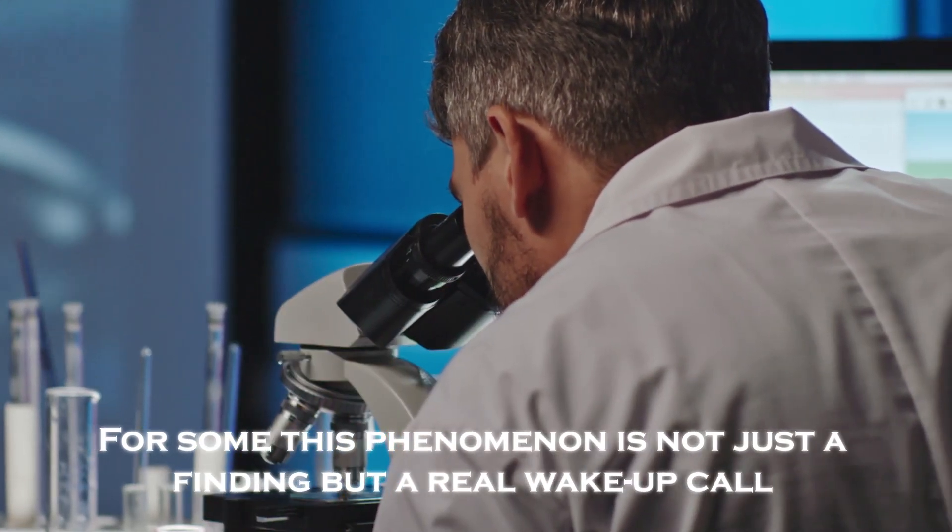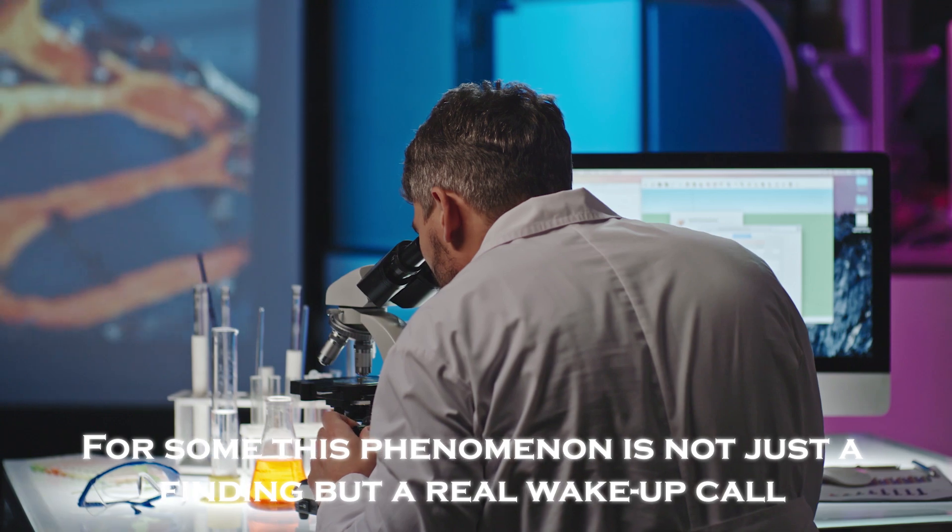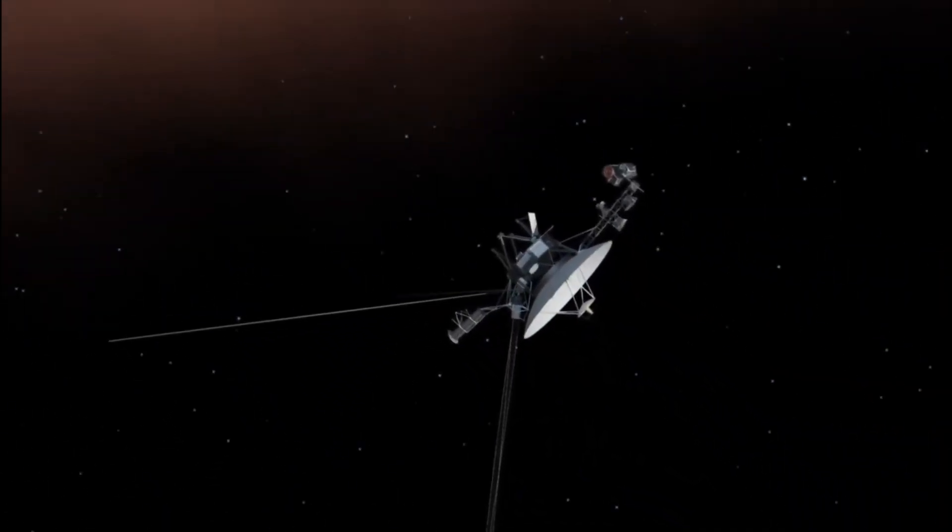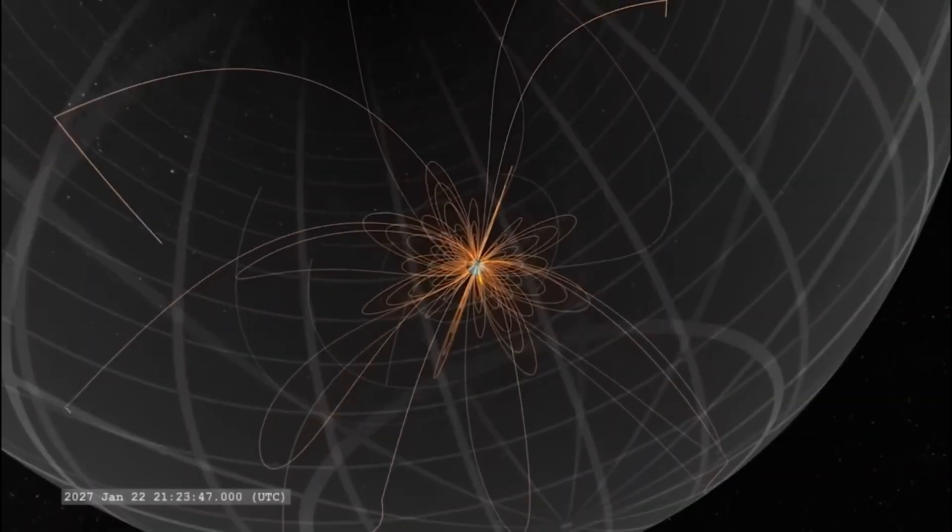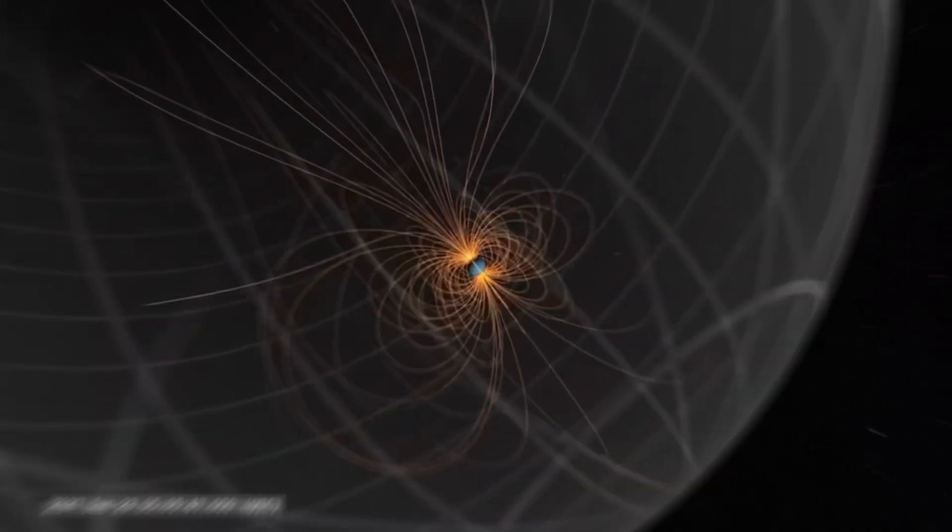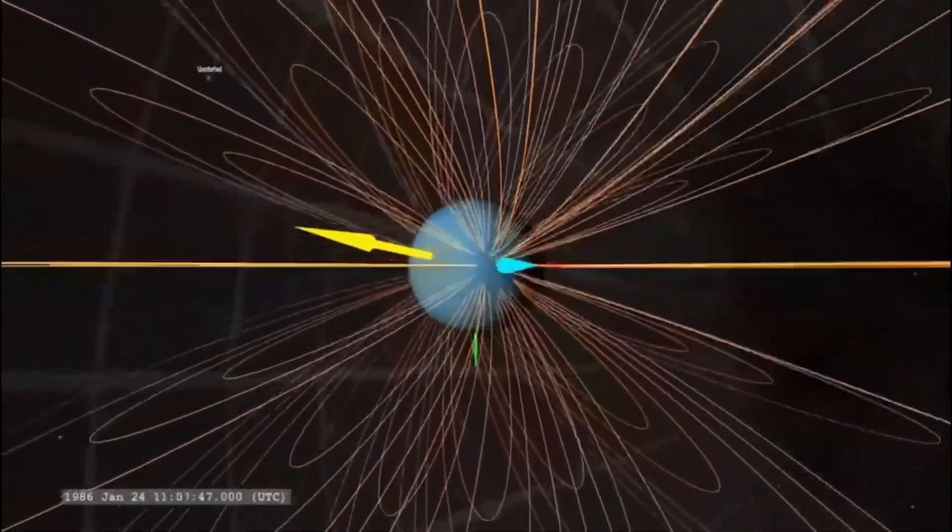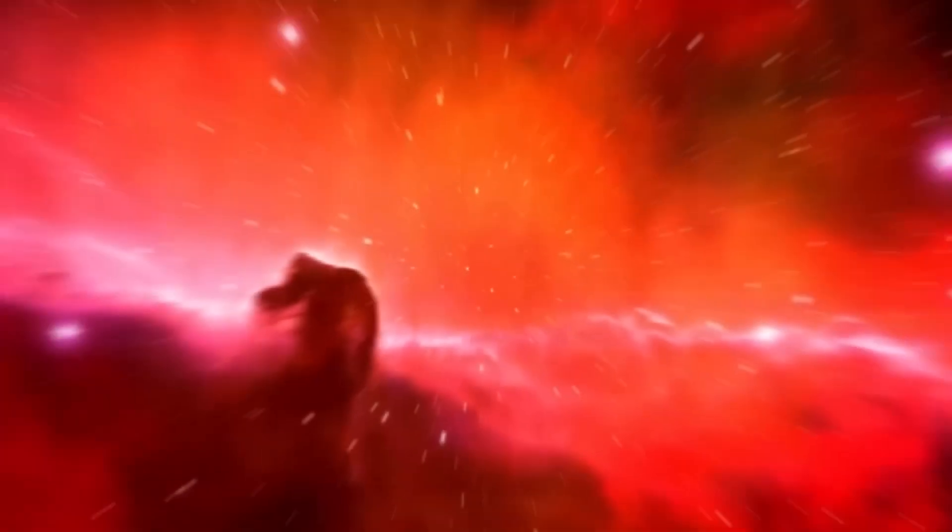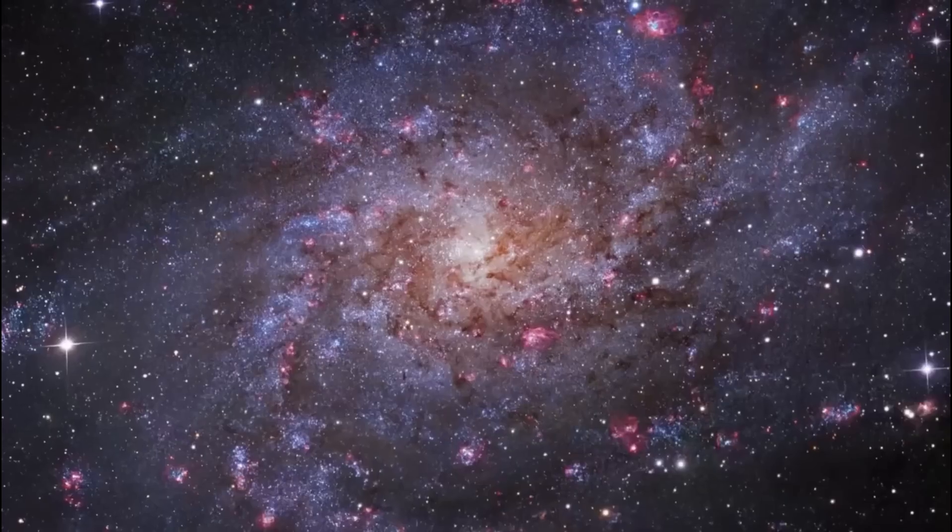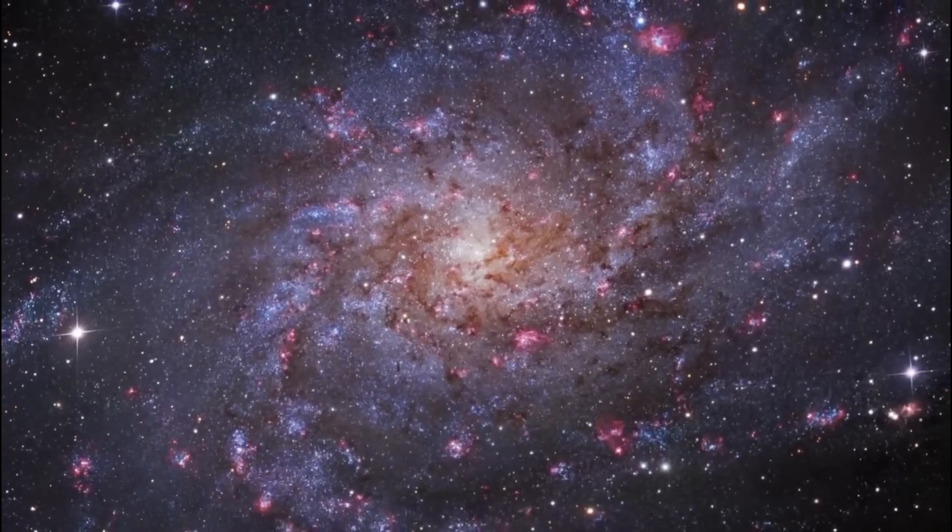For some scientists, this phenomenon is not just a finding, but a real wake-up call. Voyager 1 may be discovering an energy grid or something similar at the edge of our solar system. If these energy streams exist, we are seeing for the first time how the solar system connects to the galaxy on a scale we had not anticipated. This could radically change our understanding of energy in the universe.